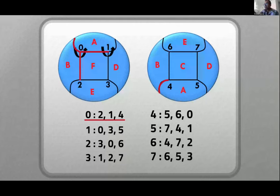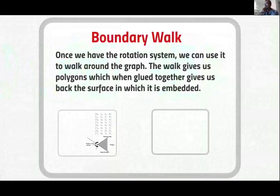This is a rotation system which tells you the ordering, the counterclockwise ordering of the edges around each vertex. Once you have the drawing or the embedding, you can find the rotation system by just looking at each vertex. Obviously, the next thing is, if I am given the rotation system, am I able to recover the embedding? We can do that, and that's called finding the boundary walk.